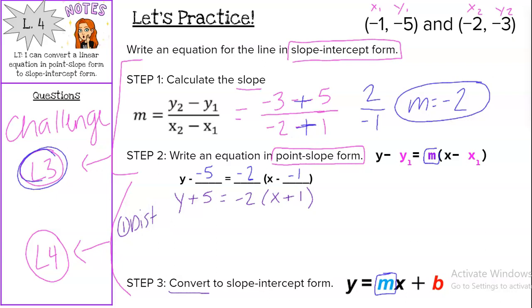So let's distribute that negative 2 to the x and the plus 1. Negative 2 times x is negative 2x. Negative 2 times 1 is negative 2. y plus 5 stays.